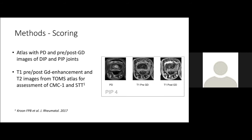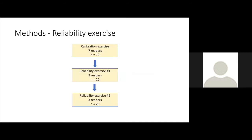For the thumb base, we applied the post-gadolinium T1 images and T2 images from the TOMS atlas. A calibration exercise with 7 readers and 10 images was arranged, and after the first exercise, two rheumatologists and one PhD student proceeded with a reliability exercise. After the first reliability exercise, we obtained relatively poor results, and we then discussed joints with grades 0 and 1 and also all joints with a difference of two or more grades, and then proceeded with a new reliability exercise with 20 patients.